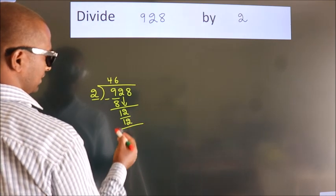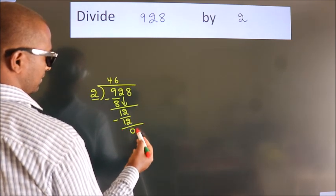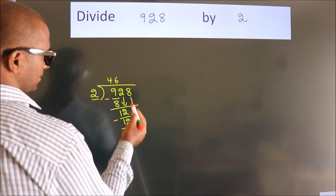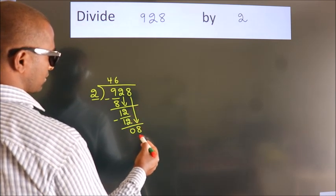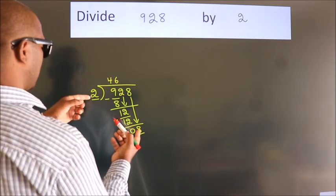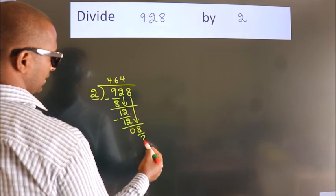Now, we subtract. We get 0. So, after this, bring down the beside number. So, 8 down. So, 8. When do we get 8? In 2 table. 2 fourths, 8.